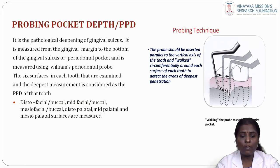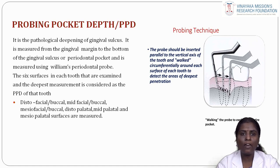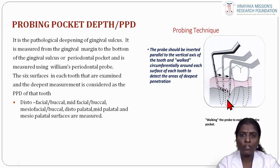Probing pocket depth (PPD) is the pathological deepening of the gingival sulcus, measured using the Williams periodontal probe. Six surfaces of each tooth are examined — distofacial, midfacial, mesiofacial, distopalatal, midpalatal and mesiopalatal — and the deepest measurement is recorded as the PPD of that tooth. The probe should be inserted parallel to the vertical axis of the tooth and walked circumferentially around each surface to detect the area of deepest penetration — this is termed 'walking the probe.'